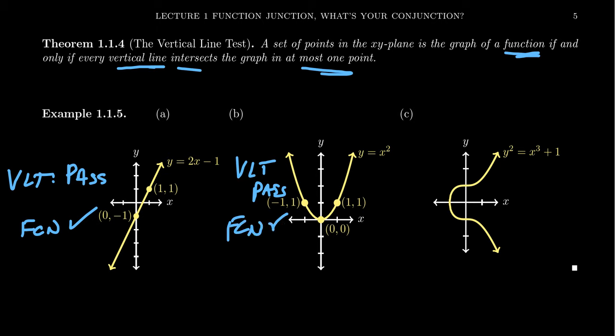Finally, example c here—this is the graph of the equation y squared equals x cubed plus 1. We can actually see here that there are instances where this graph does not pass the vertical line test. This has a situation where the y-coordinate is 1 and the y-coordinate is negative 1—it can't be both. f of 0 would have to be 1 or negative 1, can't be both. So with regard to the vertical line test, this is actually a fail. It fails the vertical line test, and that tells us it's not a function.